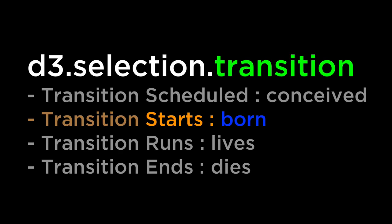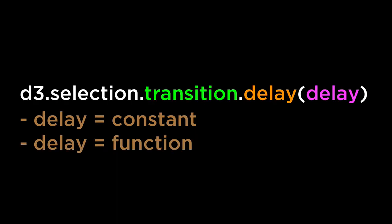Delaying transition start. As we covered before, the transition will start after the delay is run. If there is no delay, the transition will start immediately; otherwise the transition starts when the delay is over. The transition delay is calculated in milliseconds. The transition delay can be a constant value or a function. If the delay is a constant value, all elements within the selection are given the same delay and the transition will start for all elements at the same time. If the delay is a function, different elements within the selection will be given different delays and the transition will start at different times.